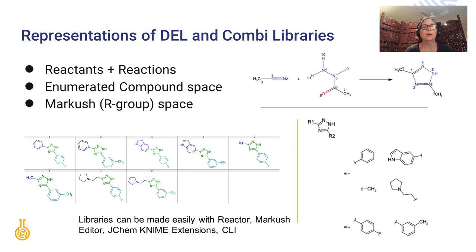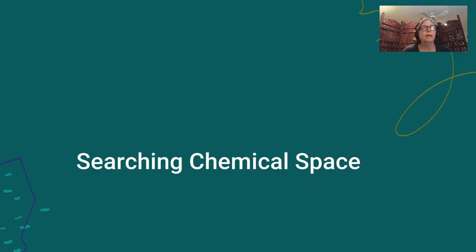Once a huge virtual library is designed and represented electronically, the work isn't done — we still have to be able to search the library to pull out compounds of interest. At ChemAxon, we have recently developed some search methods which we hope will solve part of the puzzle to make it simpler to work with very large virtual libraries. I'm not looking at quantitative measurements of search speeds today, which are very dependent on the exact setup — I'm just thinking about how our tools can help meet the cheminformatic challenges of dealing with huge compound libraries.